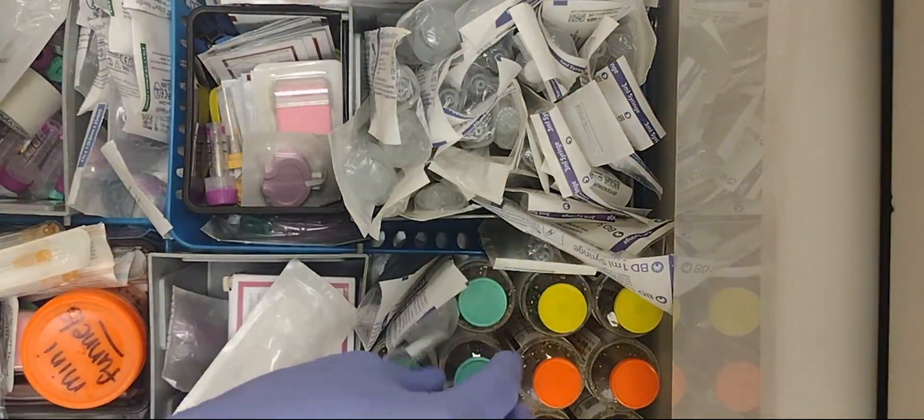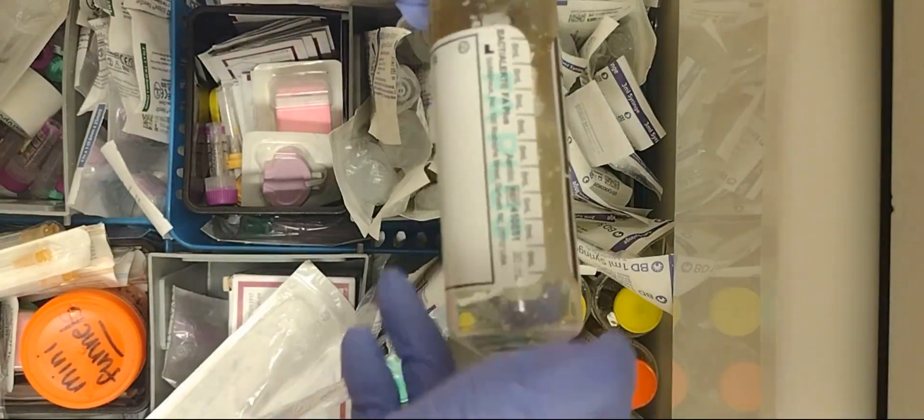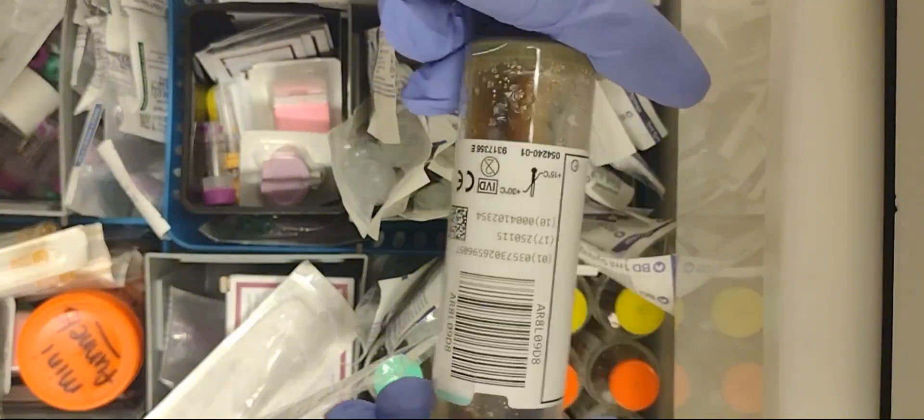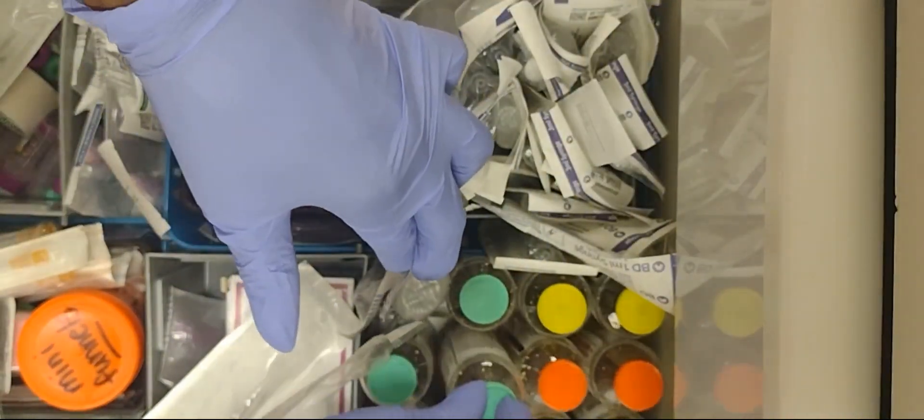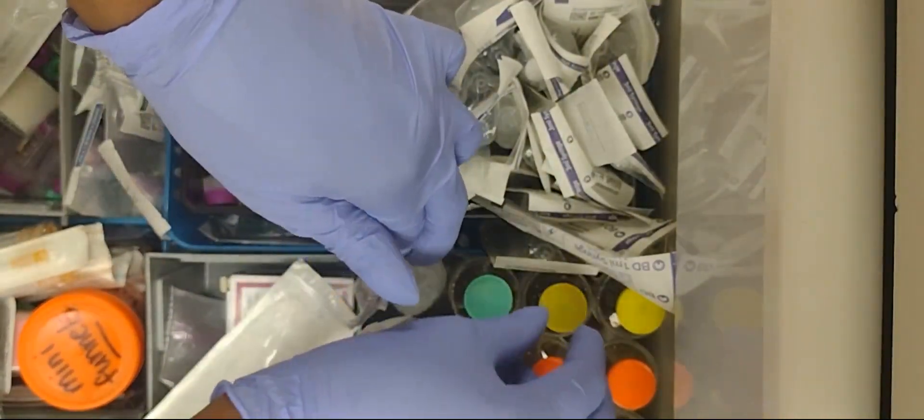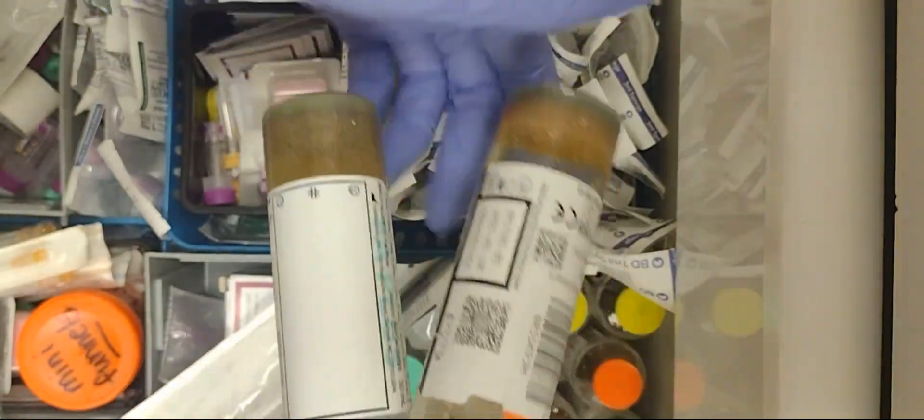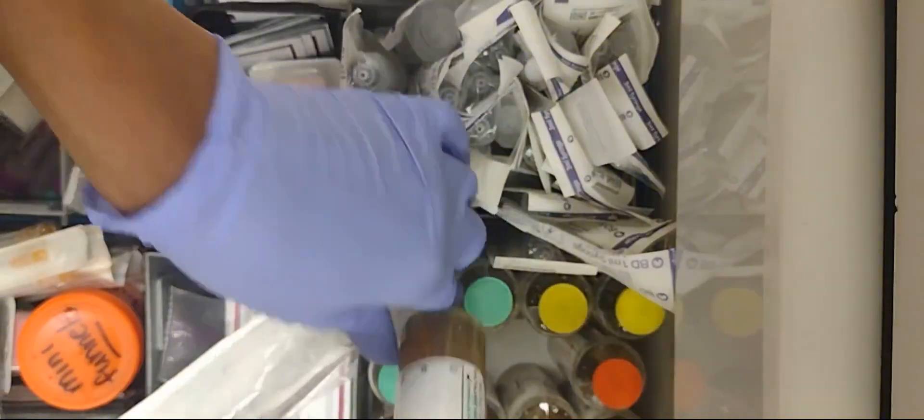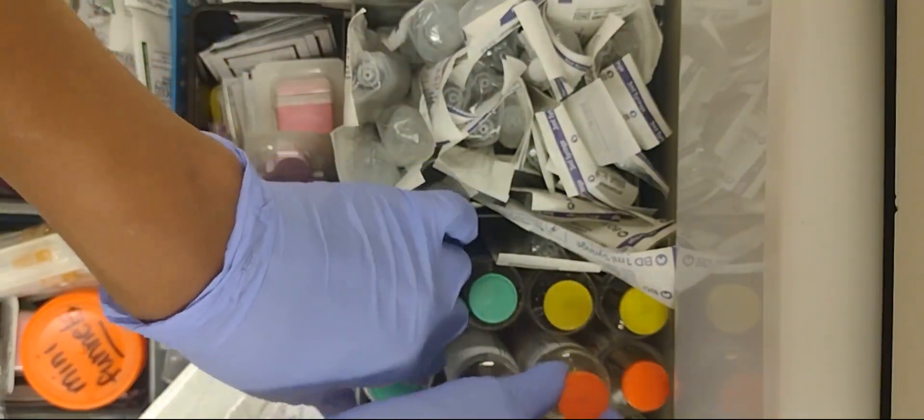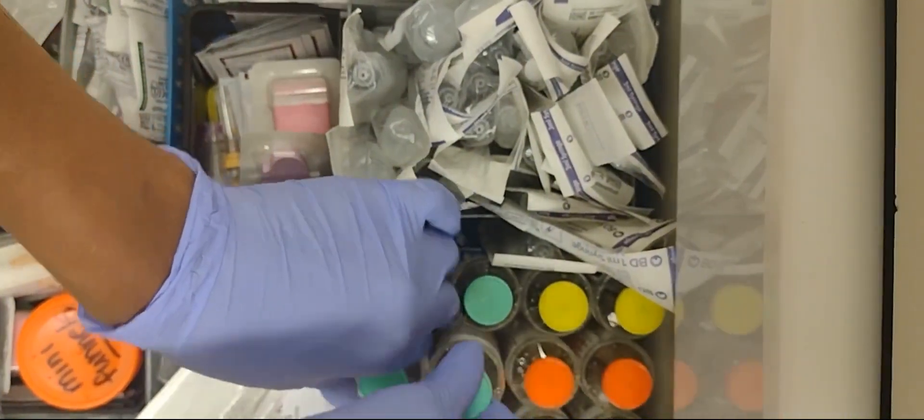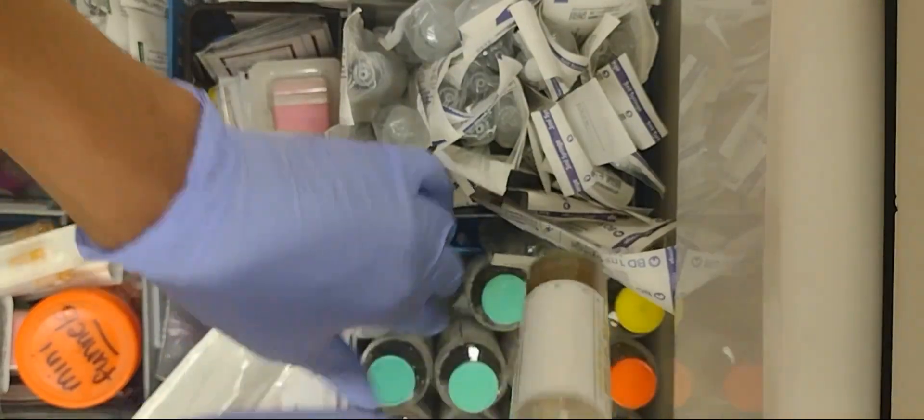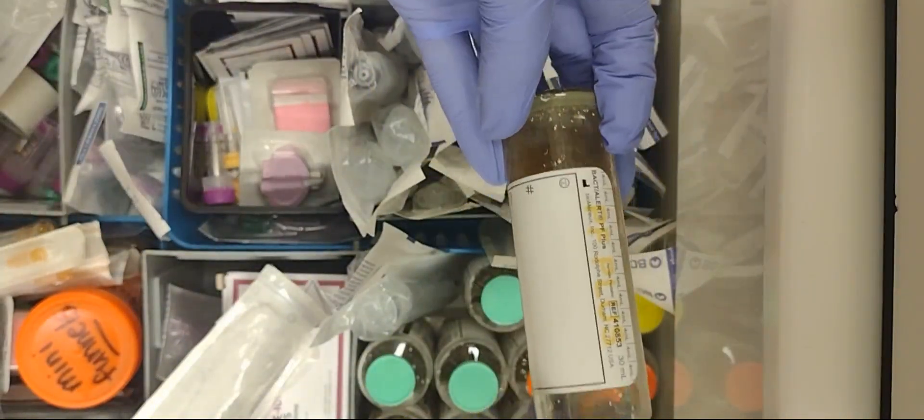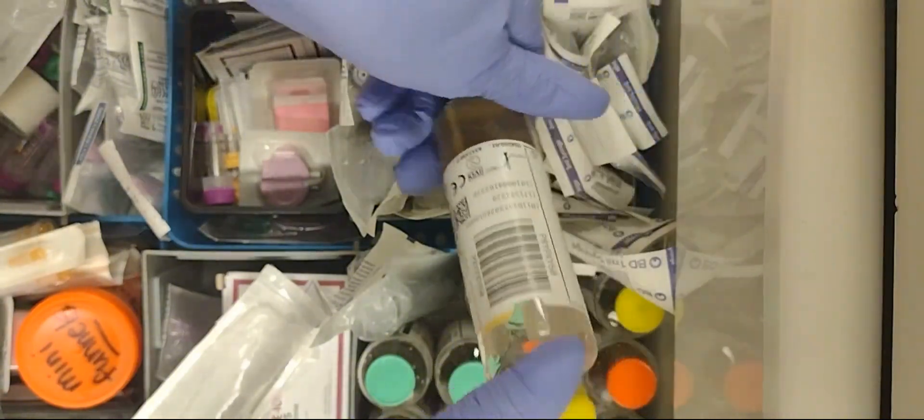These are blood culture bottles. So if they think a patient is septic, they'll order blood culture bottles. You'll have to collect the orange and a green set. This is supposed to put five ml's in each bottle. We'll talk about that on a later video if y'all are interested.